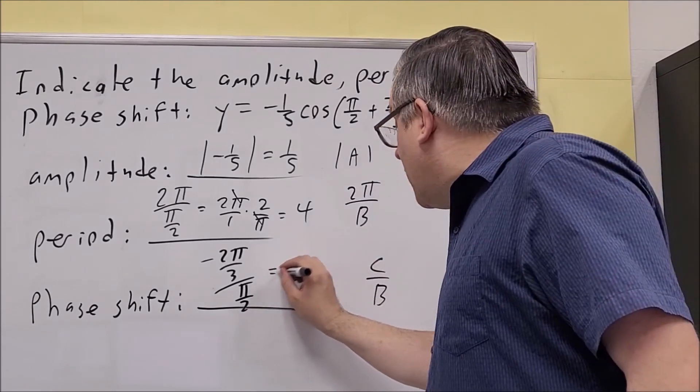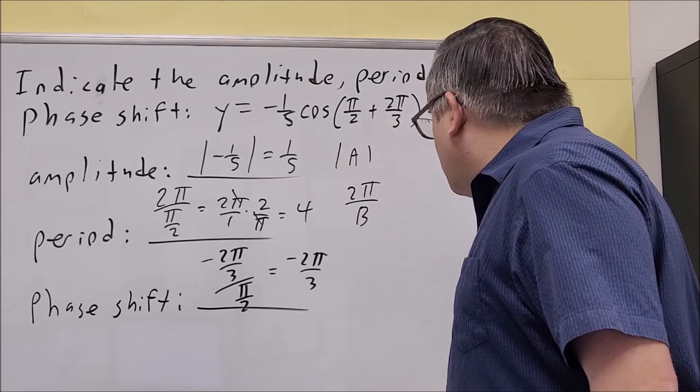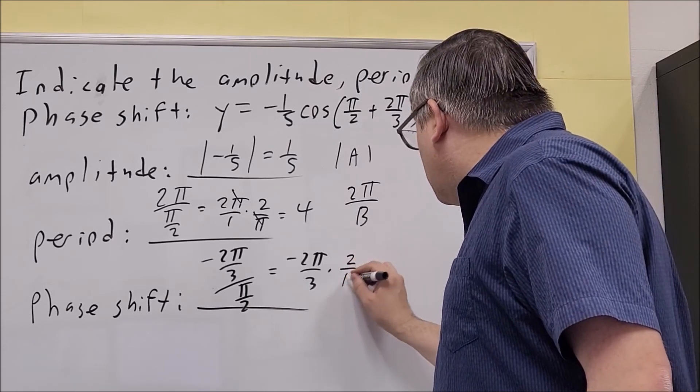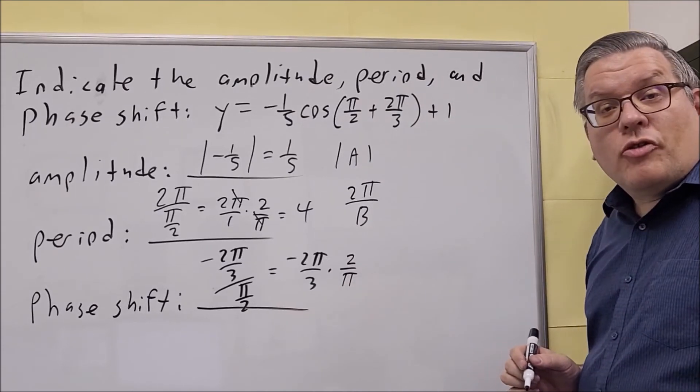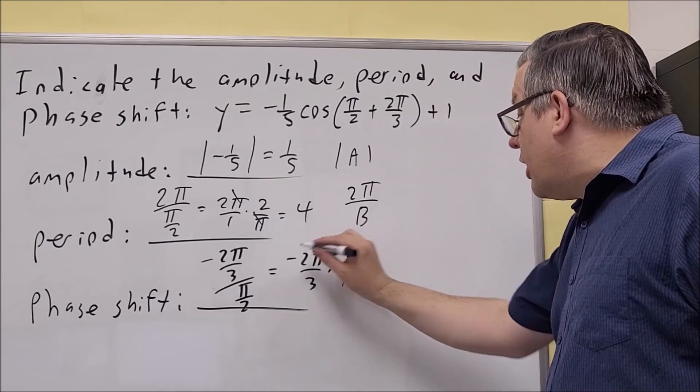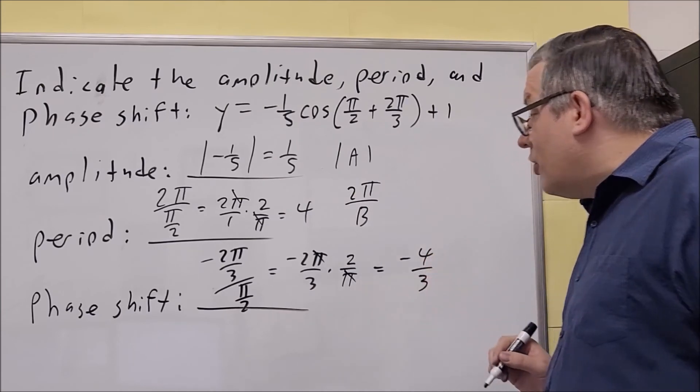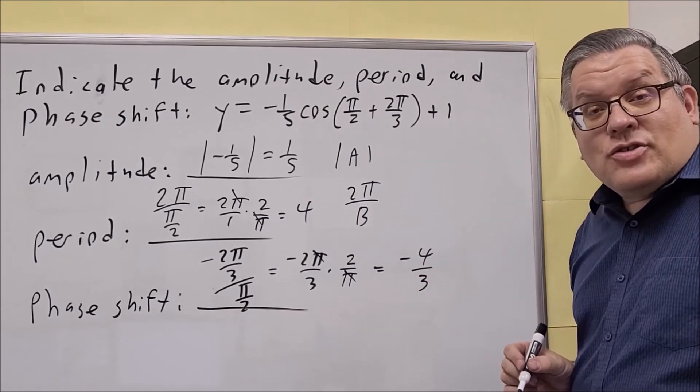Again, this is another one where you have to flip and multiply. So negative 2π over 3. And you're going to multiply it by the reciprocal 2 over π. π's cancel out here. Multiply across the top, across the bottom. Then you're going to get negative 4 thirds as your phase shift.